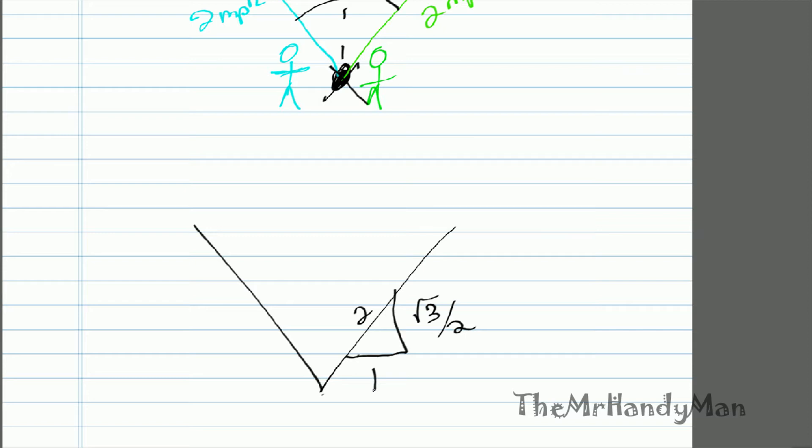And since they're at the same angle, you'll notice similar proportions here: 1, 2, √3 over 2.